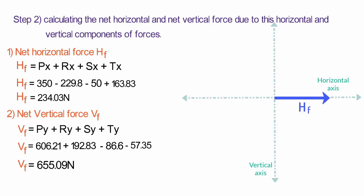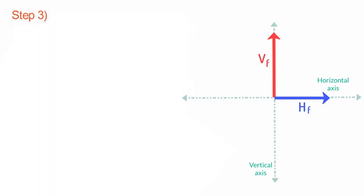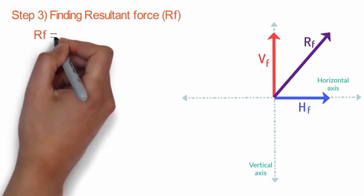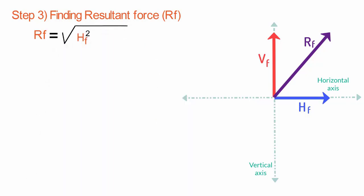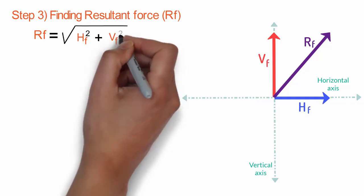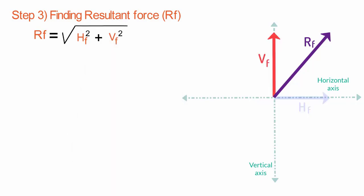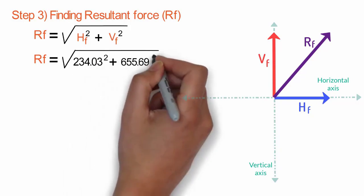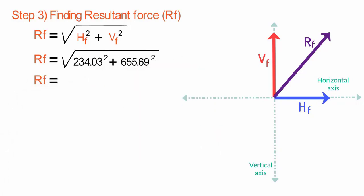We have found the net horizontal and vertical forces due to the sum of horizontal and vertical components respectively. They are 90 degrees to each other since both act along the horizontal and vertical axes. Now Step 3 — finding the resultant force. The resultant force Rf = √(Hf² + Vf²) = √(234.03² + 655.09²), which equals 695.64 Newton.